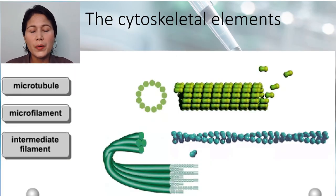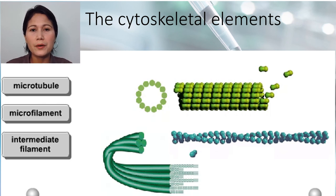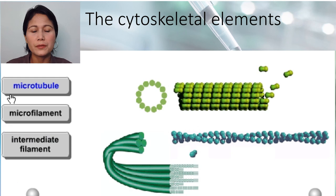Now let's go to other cell organelles. First, the cytoskeletal elements. There are three cytoskeletal elements: microtubules, microfilaments, and intermediate filaments. Let's have a look at the microtubule first.